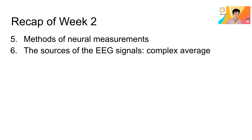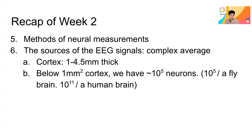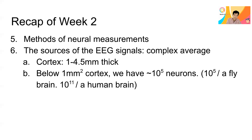I introduced the concept that EEG is a highly complex signal, averaging across many different neurons over large distances. I also gave you some important numbers: the cortex is about 1 to 4.5 millimeters thick, and within just one square millimeter, there are already 10 to the 5th neurons. For comparison, a fly also contains roughly 10 to the 5th neurons in its entire brain, whereas the human brain is really enormous — 10 to the 11th neurons in our head.